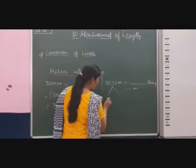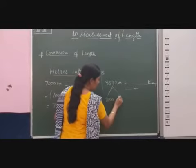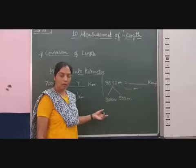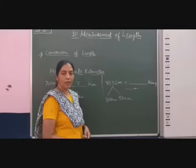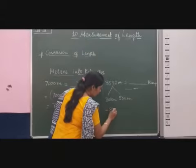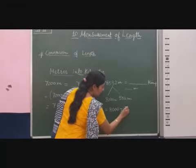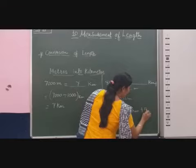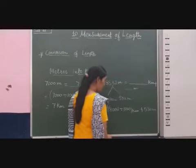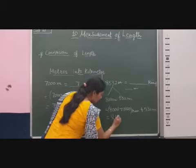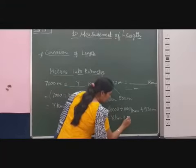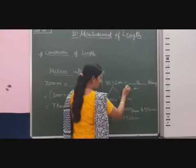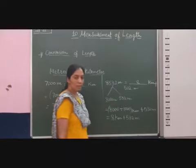We will write here 8000 and 532 meters. Now we convert into kilometers: 8000 divided by 1000 kilometers plus 532 meters, which gives 8 kilometers plus 532 meters. So our answer is 8 kilometers and 532 meters.